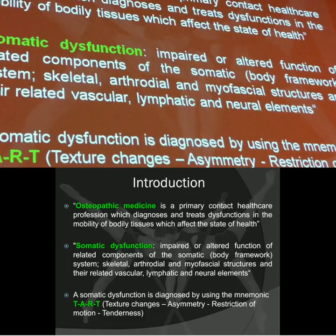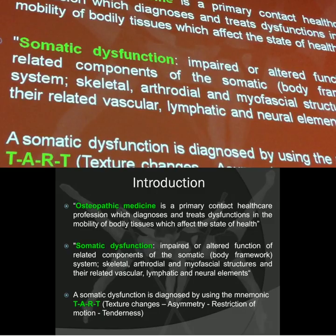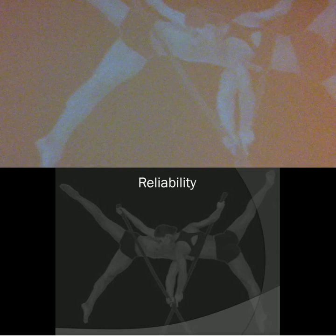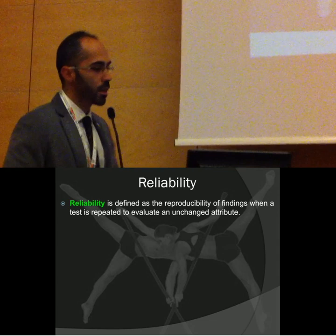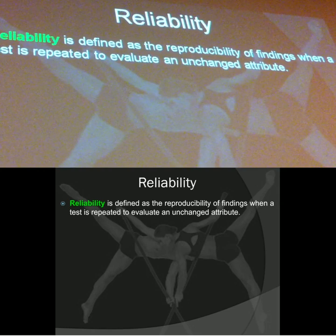What is very important is that to detect somatic dysfunction, we need a test. The core of this research was actually the reliability. Reliability is important because we need to know what to do and we need to trust what we do for the diagnosis, prognosis, and monitoring of the patient. It's defined as reproducibility of findings when a test is repeated to evaluate an unchanged attribute.